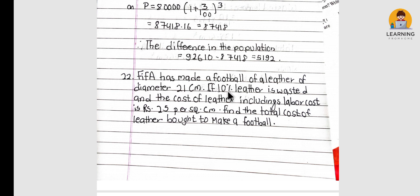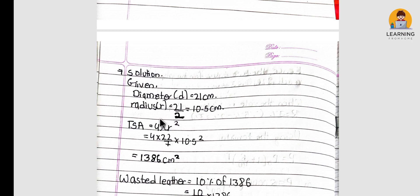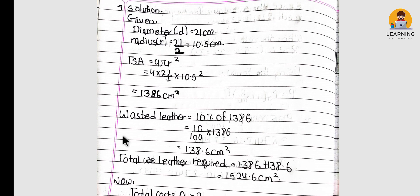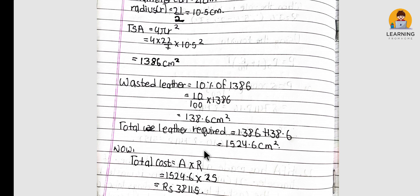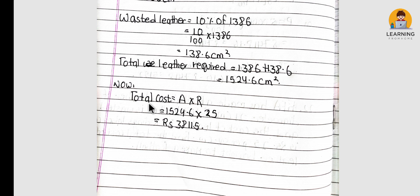FIFA made a football of leather of diameter 21 cm. If 10% of the leather is wasted and the cost of leather including labor is Rs 25 per cm², find the total cost of leather bought to make the football. Diameter = 21 cm, radius = 10.5 cm. TSA = 4πr² = 1386 cm². With 10% waste, total leather needed = 1386 × (110/100) = 1524.6 cm². Total cost = 1524.6 × 25.